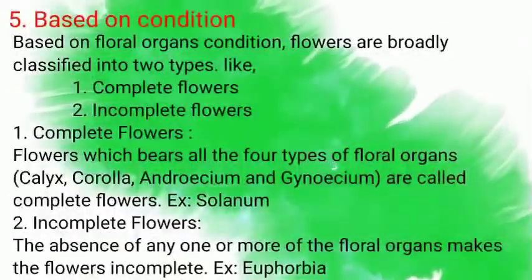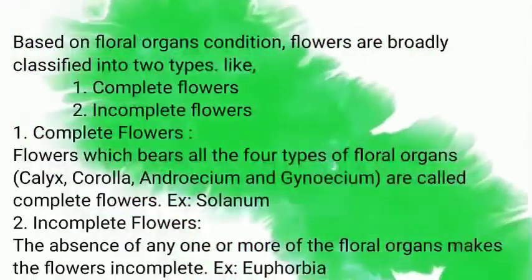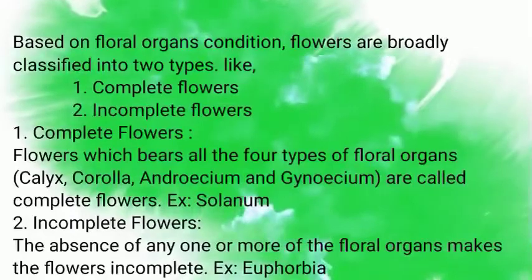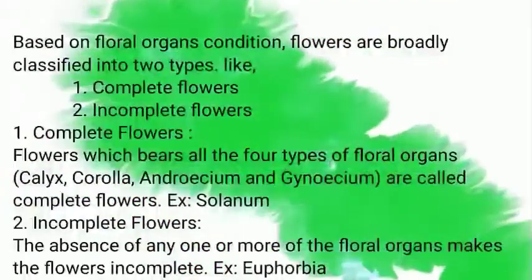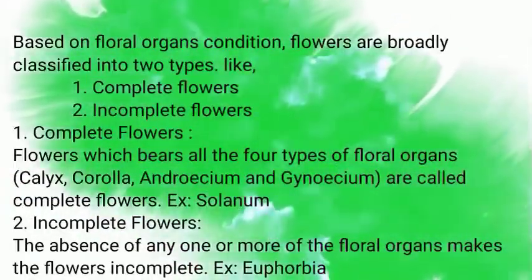The fifth aspect of classification of flowers is based on Condition. Based on floral organ condition, flowers are broadly classified into two types: Complete Flowers and Incomplete Flowers. Complete Flowers bear all four types of floral organs — Calyx, Corolla, Androecium, and Gynoecium. Example: Solanum species. Incomplete Flowers are those where the absence of any one or more floral organs makes the flower incomplete. Example: Euphorbia species.